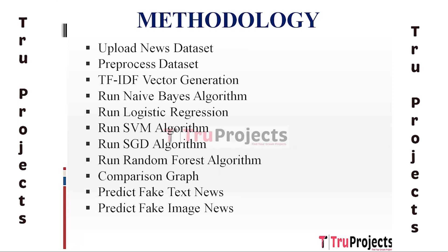The sixth module is Run SVM Algorithm. Support Vector Machine (SVM) is a powerful algorithm for binary classification tasks. The pre-processed and TF-IDF transformed news dataset is used to train an SVM model. The SVM model aims to find the optimal hyperplane that best separates fake and real news articles in the TF-IDF feature space.